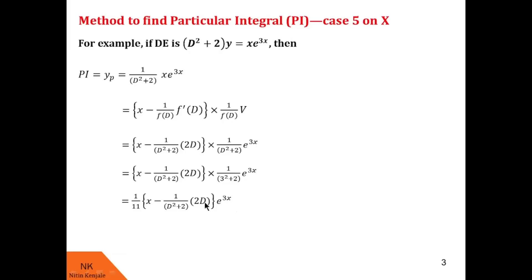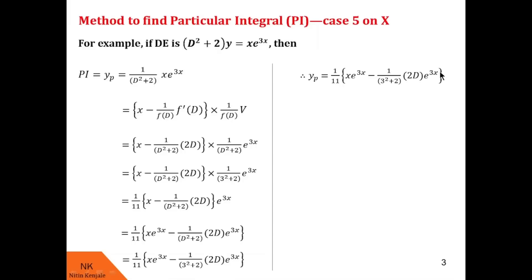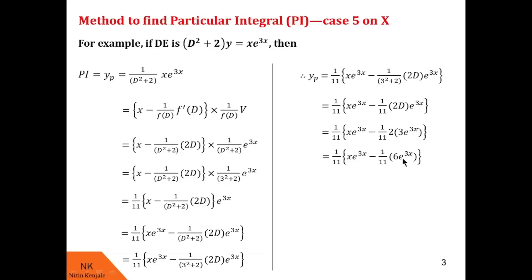Let us take this e^(3x) inside the curly brackets. So we have now x·e^(3x) minus 1/(D² + 2) times 2D of e^(3x). We will operate 1/(D² + 2) on e^(3x) first by substituting D = 3, giving 1/11 again. Then we calculate 2 times the derivative of e^(3x), which is 3e^(3x). So finally we get 3 times 2 = 6, giving (1/11)[x·e^(3x) minus (6/11)e^(3x)].